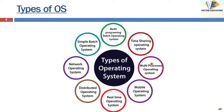Now we come to the multiprocessing operating system. In this type of OS, two or more CPUs control the functions of the computer. Each CPU contains a copy of the OS, and these copies communicate with one another to coordinate operations. Each CPU has its own local memory and executes load and store instructions in that memory.